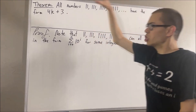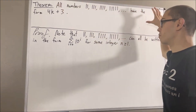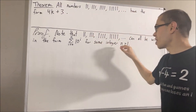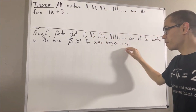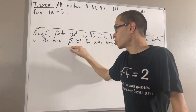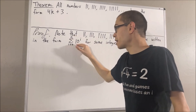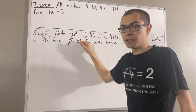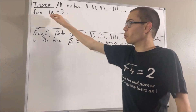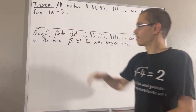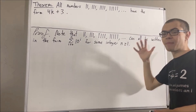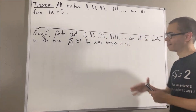So to prove the theorem, we're actually going to prove: for all integers n greater than or equal to 1, the sum from i equals 0 to n of 10 to the power of i can be written in the form 4k plus 3. And to prove that, we're going to use mathematical induction.